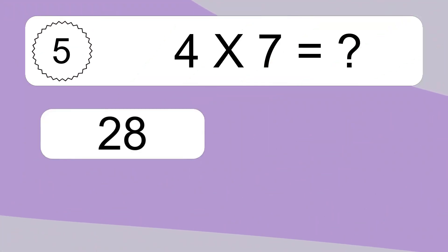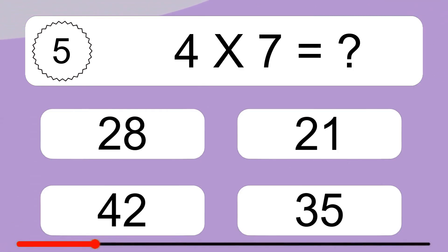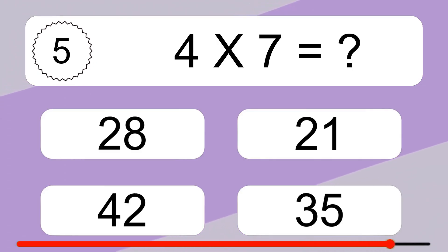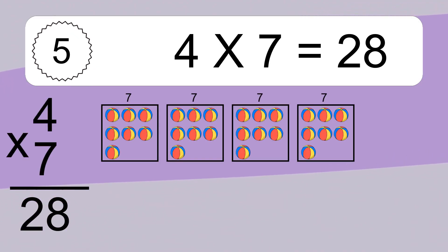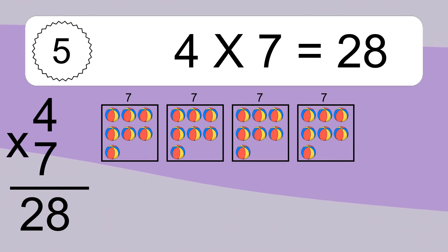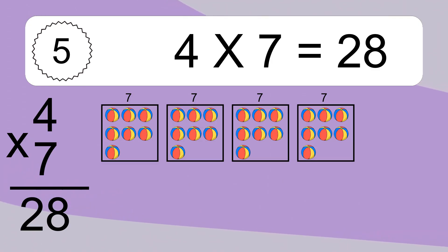Four times seven equals what? Four times seven equals 28. We have four boxes, and each box has seven colorful balls inside. If you count all the balls in all the boxes together, you will have four times seven balls. This equals 28 balls.